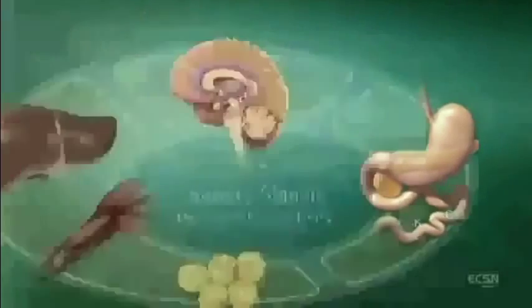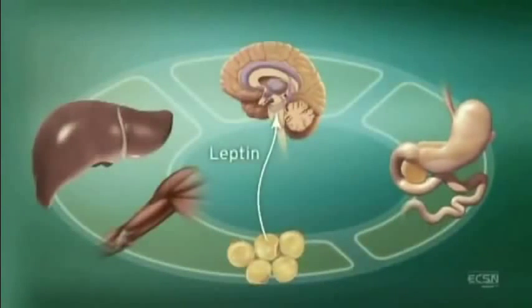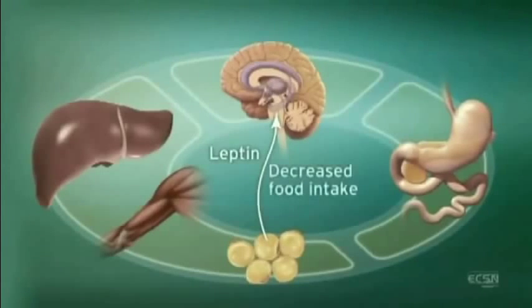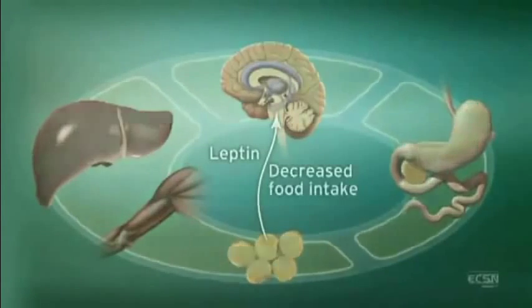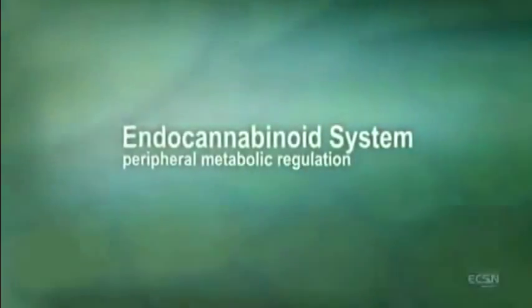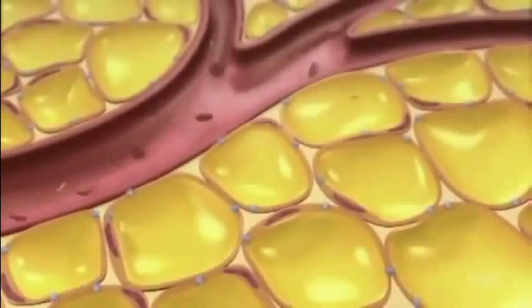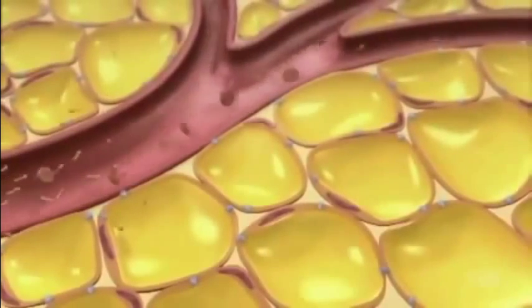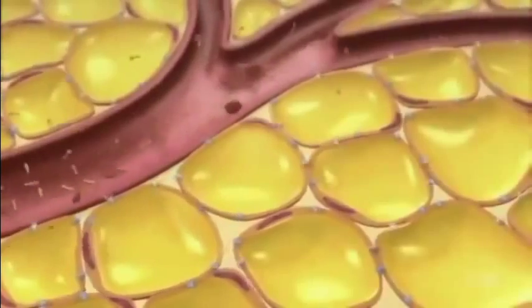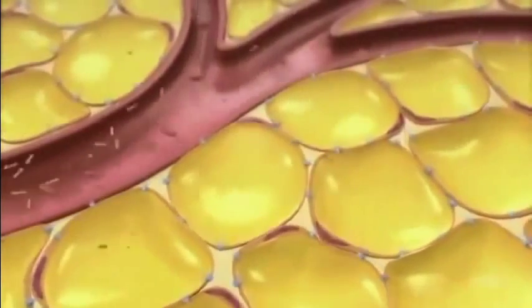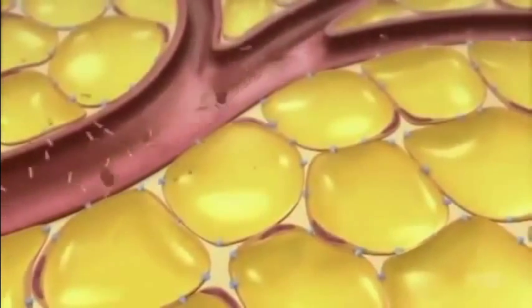After eating, cholecystokinin in the duodenum triggers satiety signals, and subsequently ECS activity is decreased through suppression of CB1 expression. An increase in the adiposity hormone leptin decreases endocannabinoid levels in the hypothalamus and decreases food intake. ECS regulation of peripheral metabolism influences energy balance: stimulation of the ECS increases food intake and adiposity, while conversely, blocking CB1 receptors reduces food intake and adiposity.